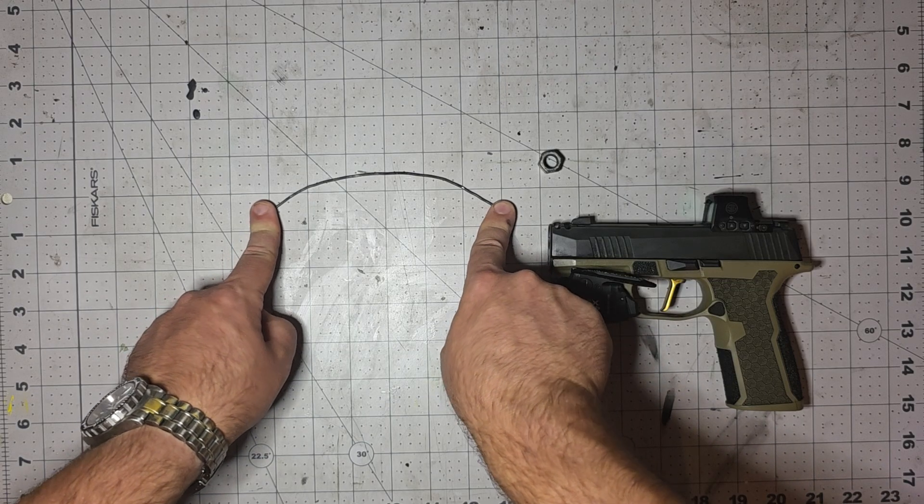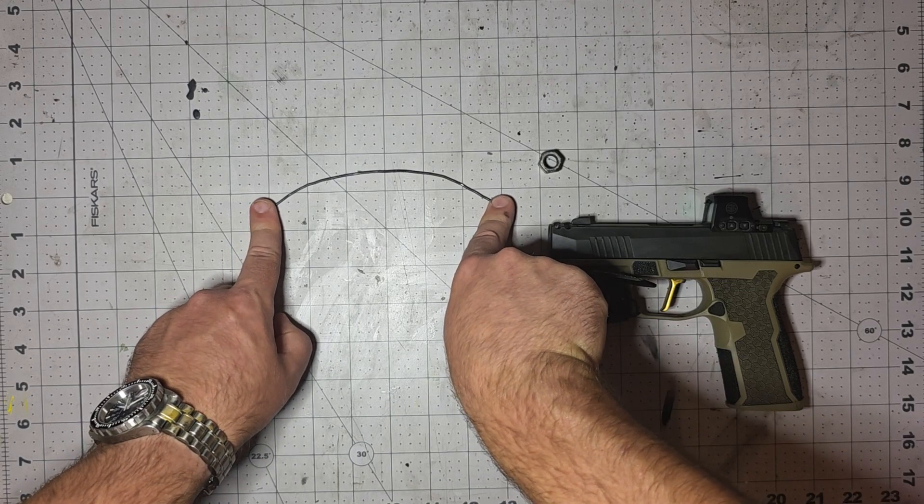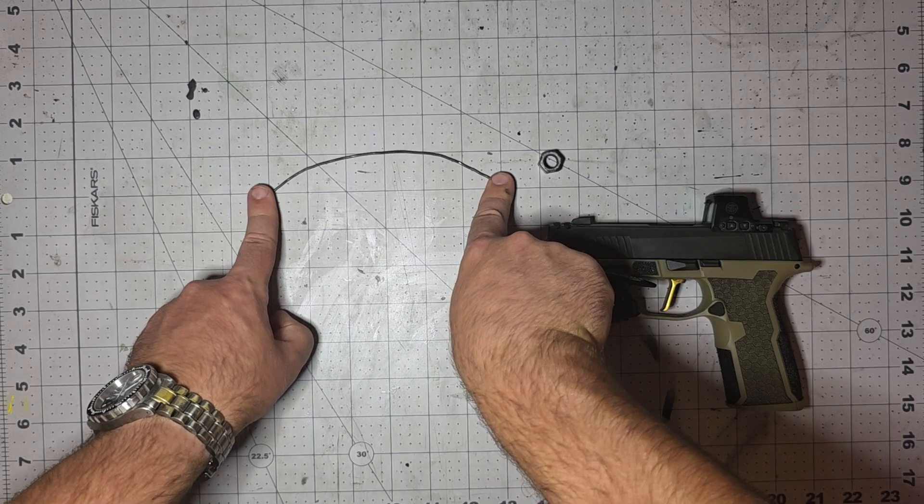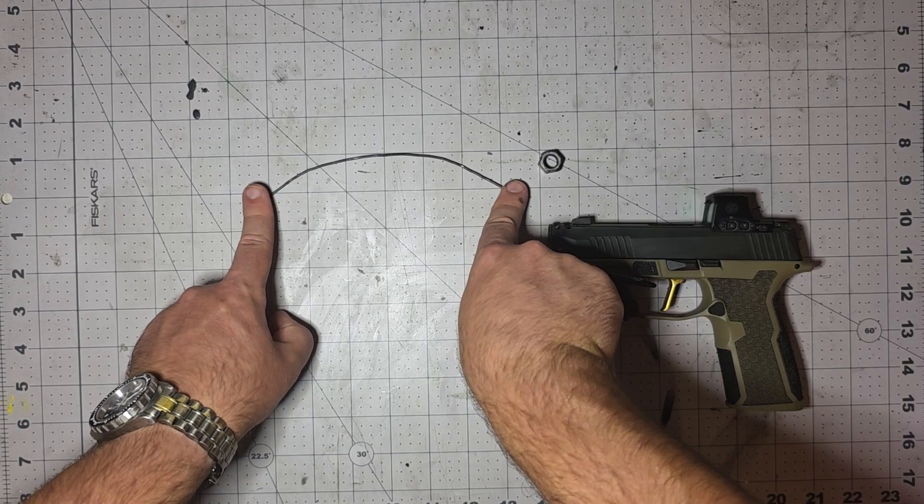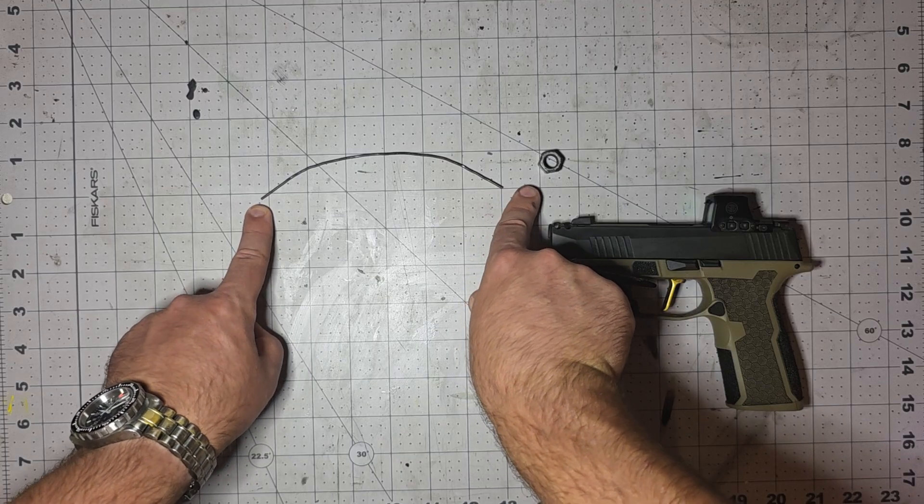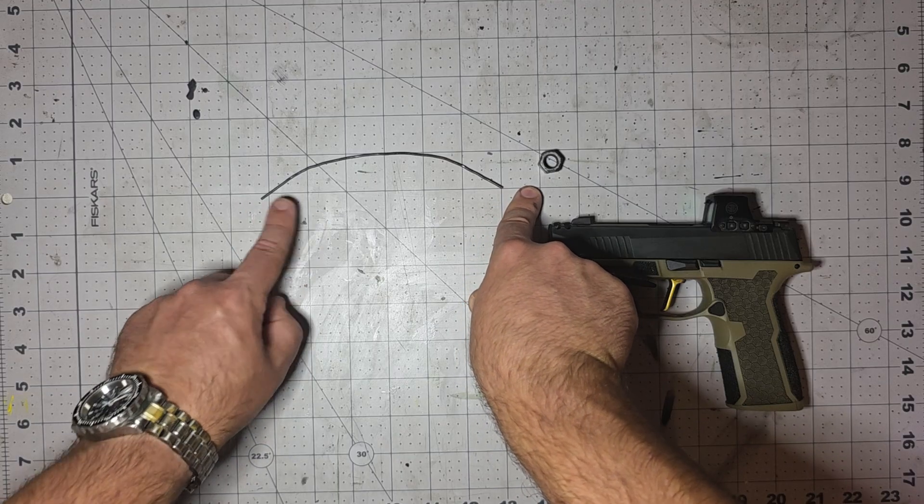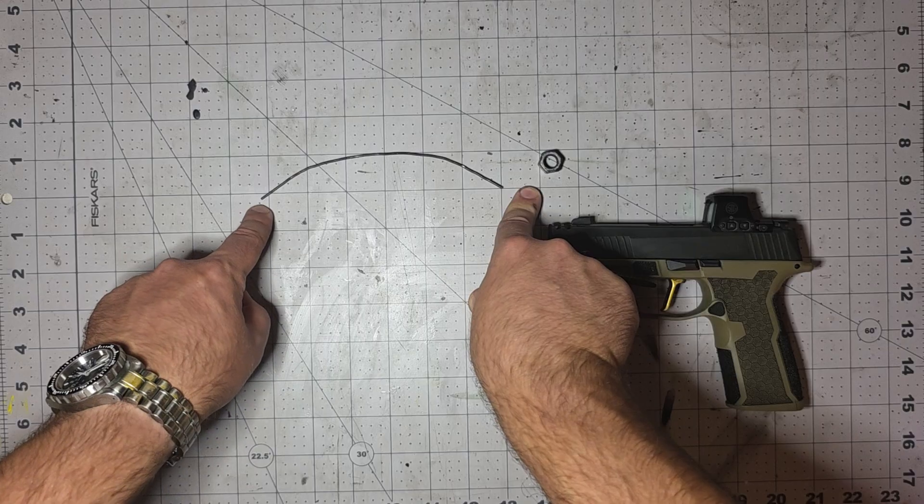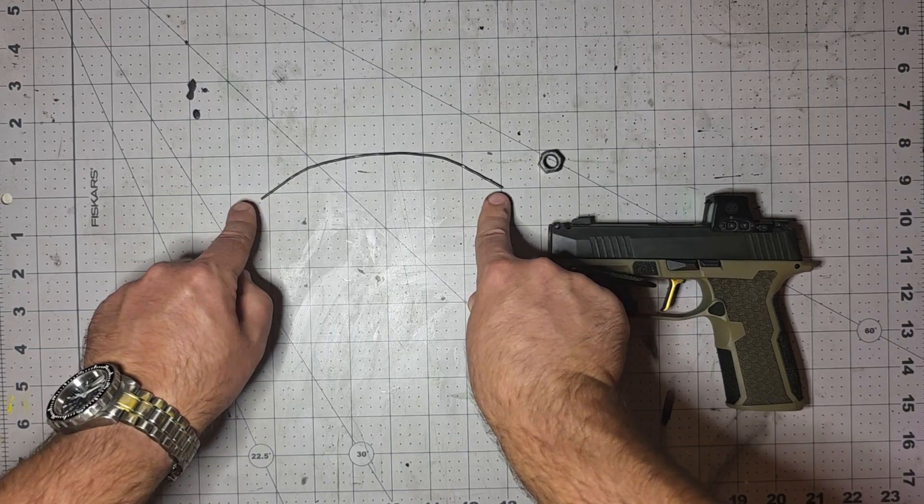But as I change the trajectory of the gun and the zero, the line becomes wider. Now it's here and here, and this might be 10 yards and 75 yards.